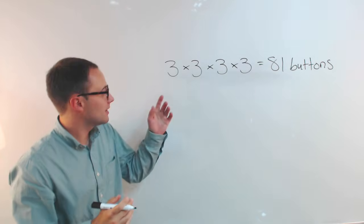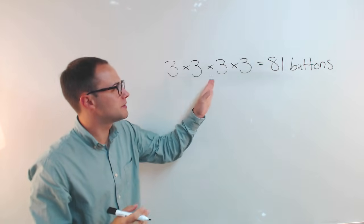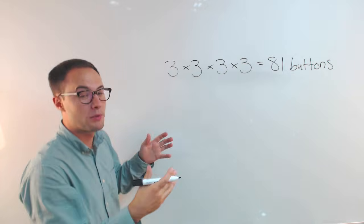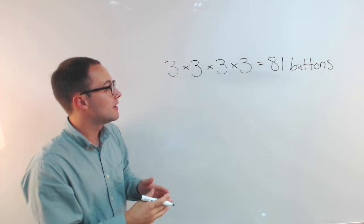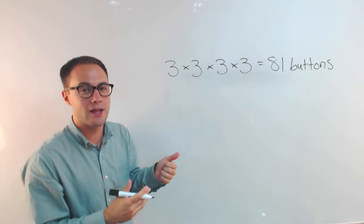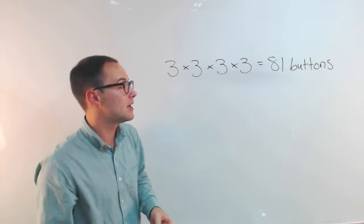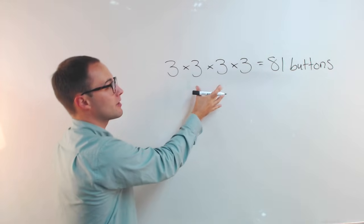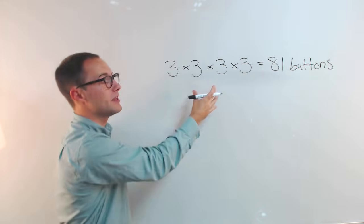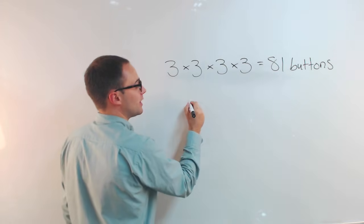Now instead of writing three times three times three times three, which can be a little boring, there's a shortcut — we could write that another way using powers. Instead of writing the product like this, we could write this product as a power.